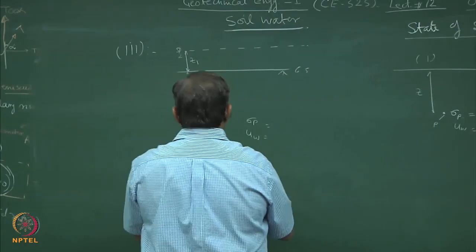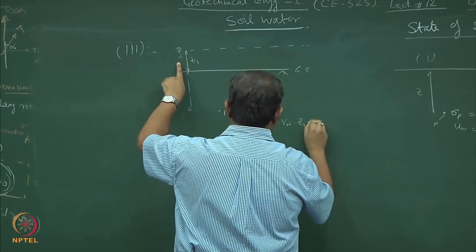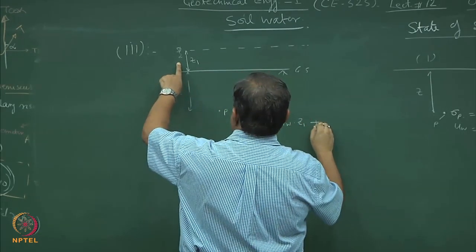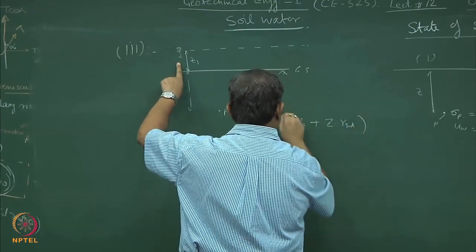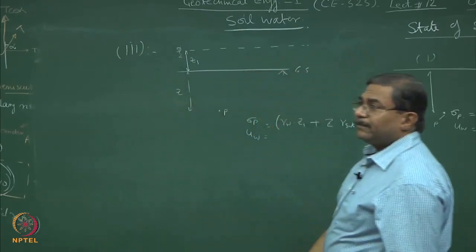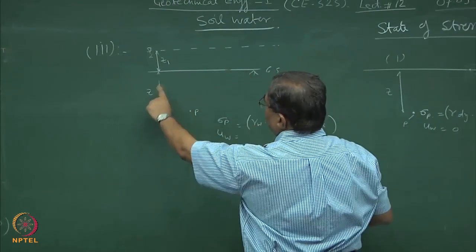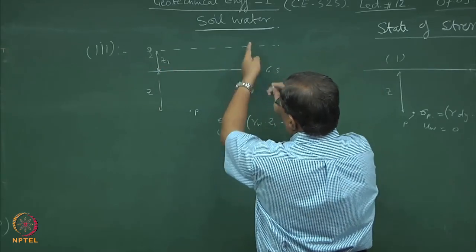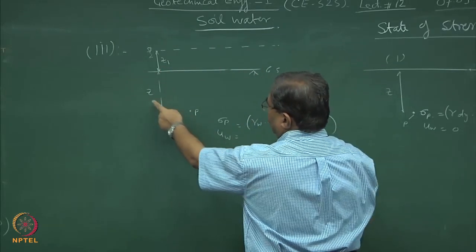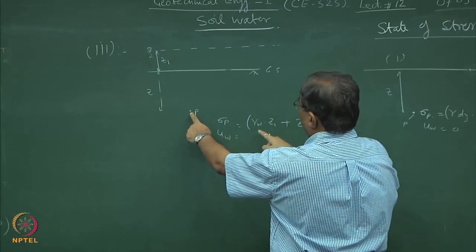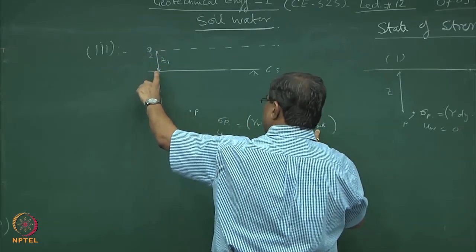Do it systematically. Sigma_P will be equal to γ_w·z1 plus γ_sat·z. This is the overburden — up to this point the water table is here, so the whole soil mass is saturated. At this point, the stresses will be γ_w·z1 plus γ_sat times z.